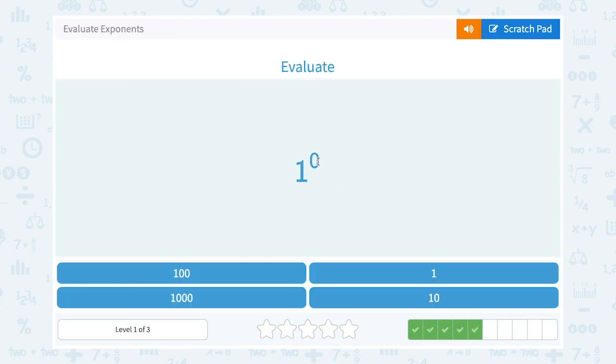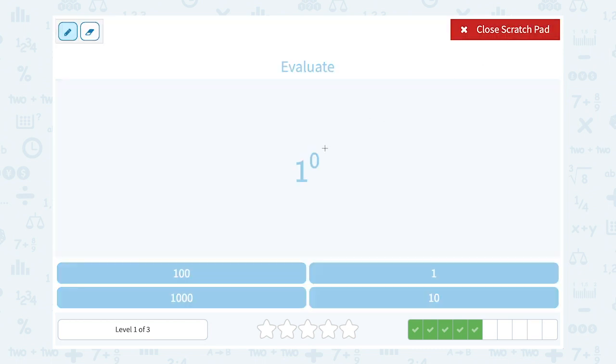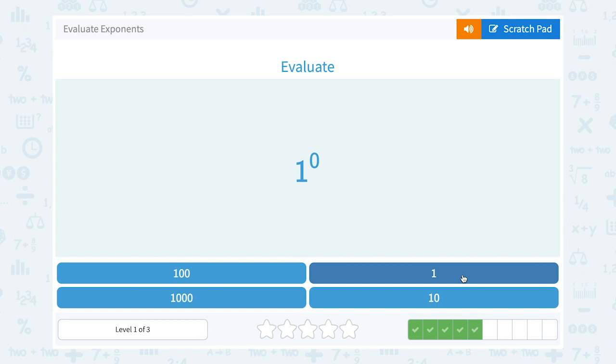One to the zero power. Now this is a special case. When you have any number raised to the zero power, and it actually doesn't matter - it could be one to the zero power or it could even be fifty-seven to the zero power, right? Any number raised to the zero power always equals one. So anytime you see something to the zero power, automatically your answer is going to be one.